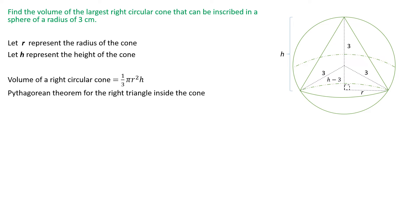We want to create an equation for the volume of the cone which only has one variable in it. Currently the equation has two variables — a radius and a height. So we want to write a volume function in terms of only one variable, and that's why we're going to use the right angle triangle inside of the cone.